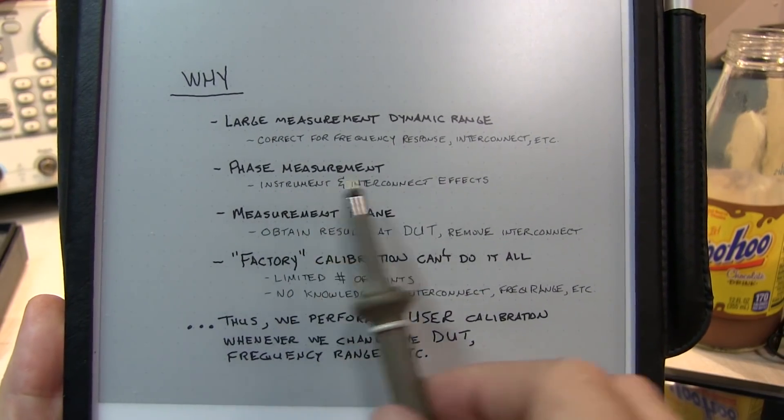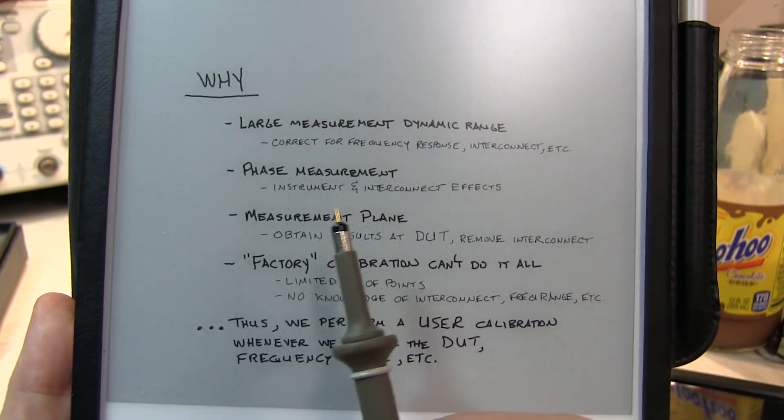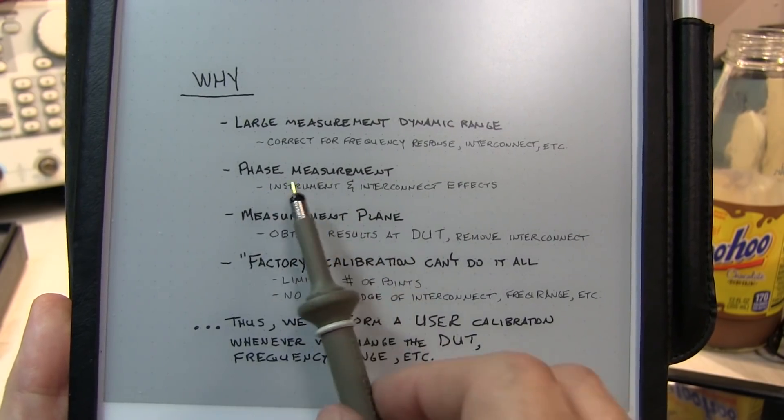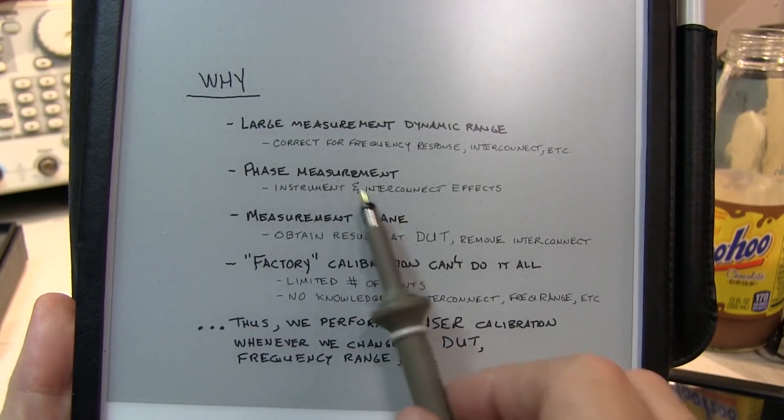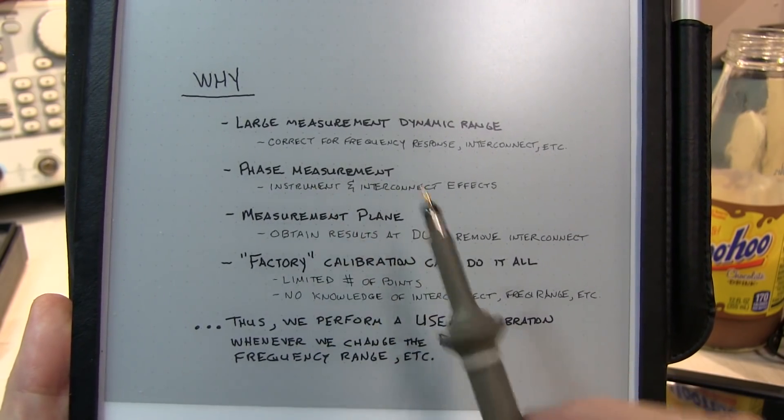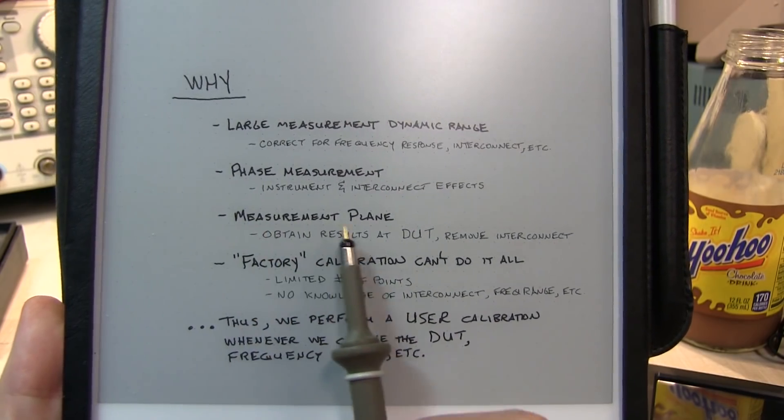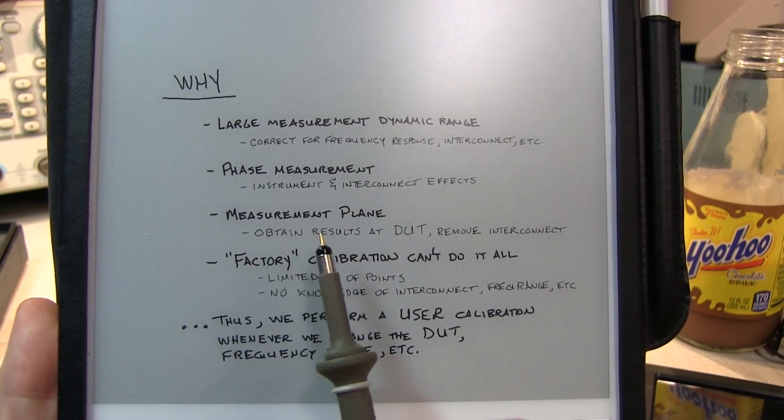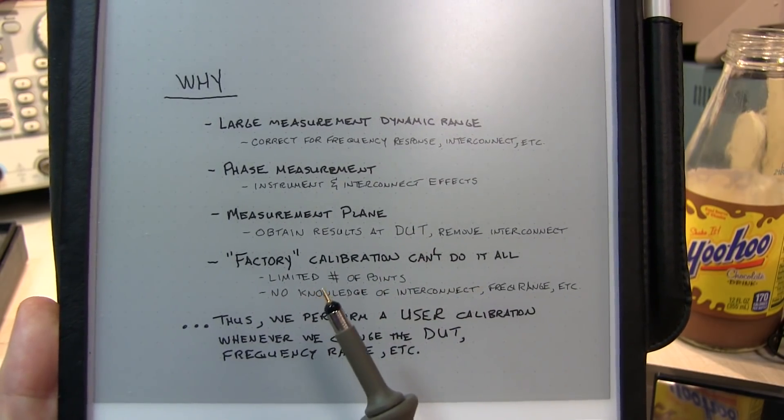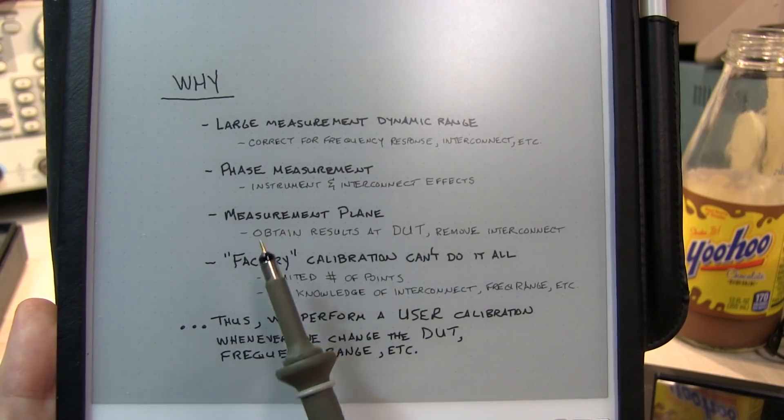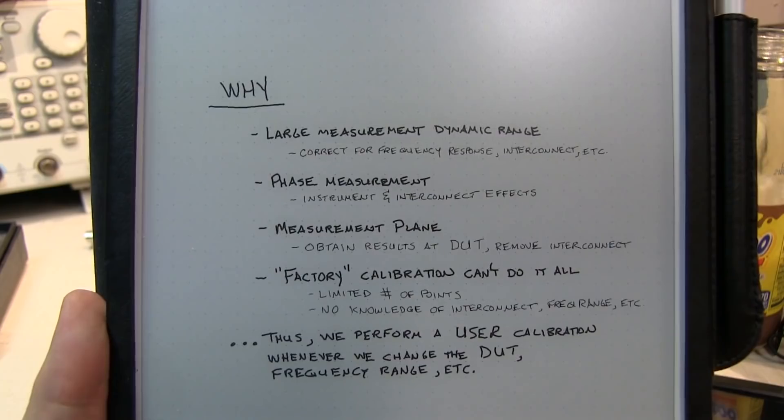We also need to correct for phase response as well as frequency response, especially since we want to measure complex reflection coefficient and complex impedance. We need to really zero out any errors in non-linearity of the phase response of the instrument and interconnect. Another very important reason is to establish what we call a measurement plane or calibration plane. Many times, you can't connect your device under test directly to the terminals of the VNA. You've got to connect it with some coax, and the effect of that coax is that it's going to change the impedance that's seen by the VNA.